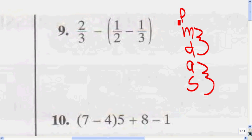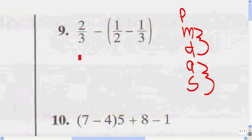Make sure that you do the parentheses first. So here we have our parentheses, and inside our parentheses we have 1/2 minus 1/3. To be able to combine these two fractions, we've got to find the common denominator. So let's find the common denominator first, before we do anything else.